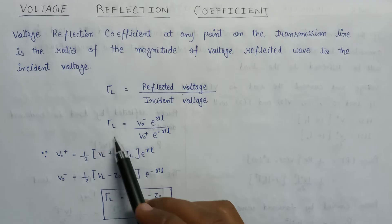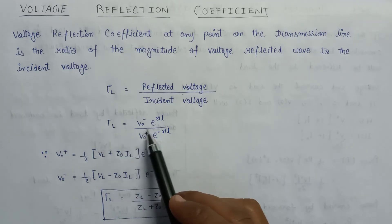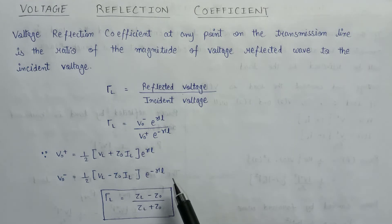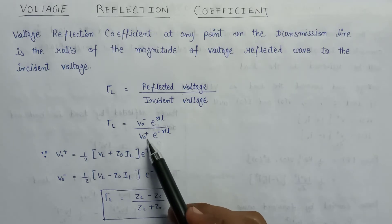In terms of V naught plus and V naught minus, the formula for the voltage reflection coefficient is V naught minus e to the power gamma L over V naught plus e to the power minus gamma L. Since in the derivation of input impedance we derived the value of V naught plus and V naught minus.